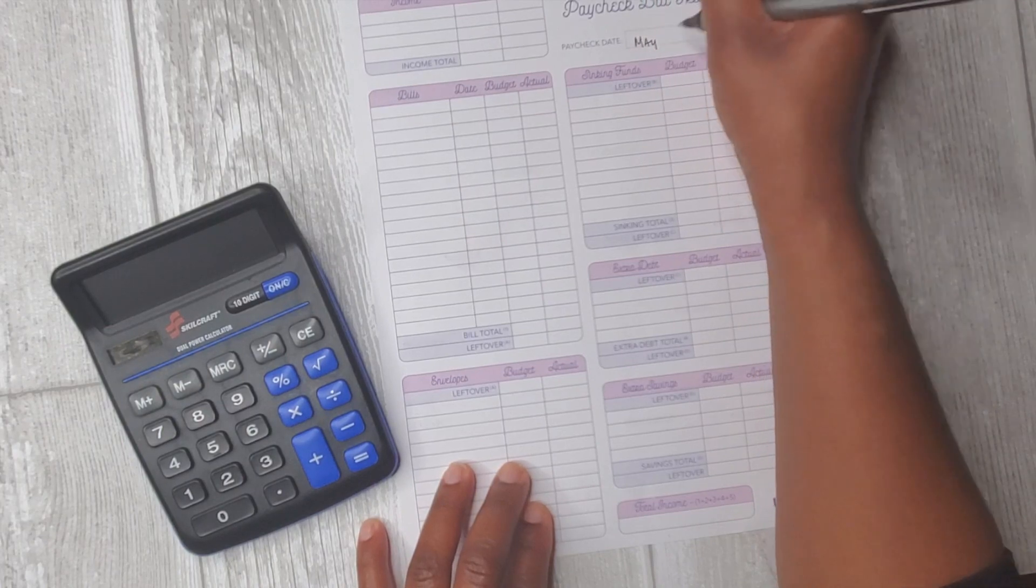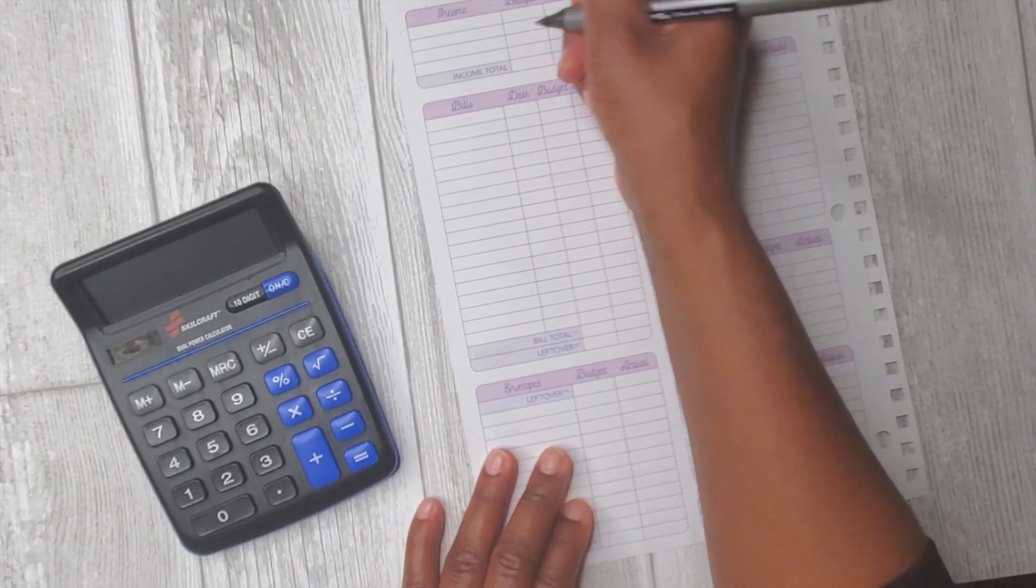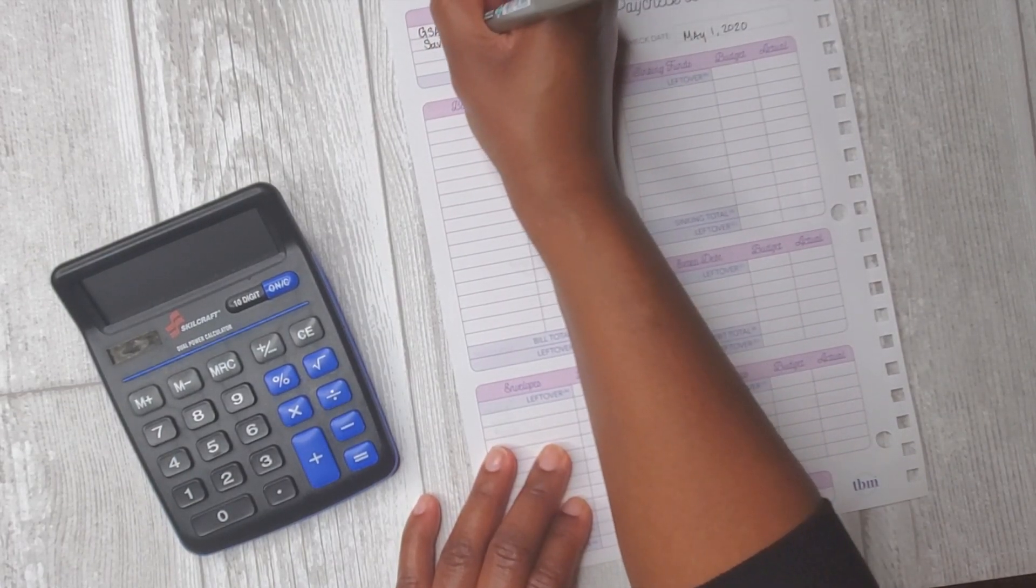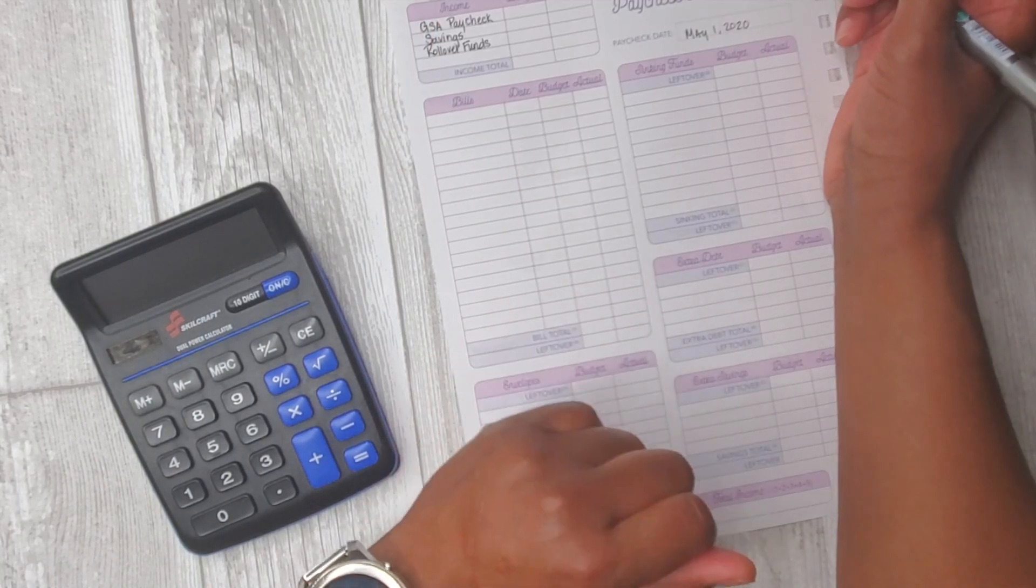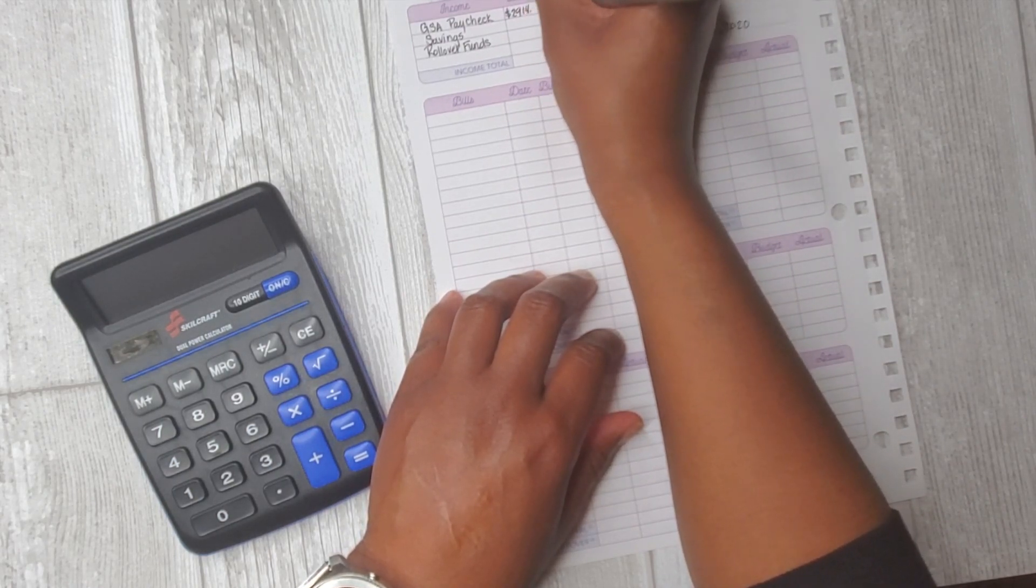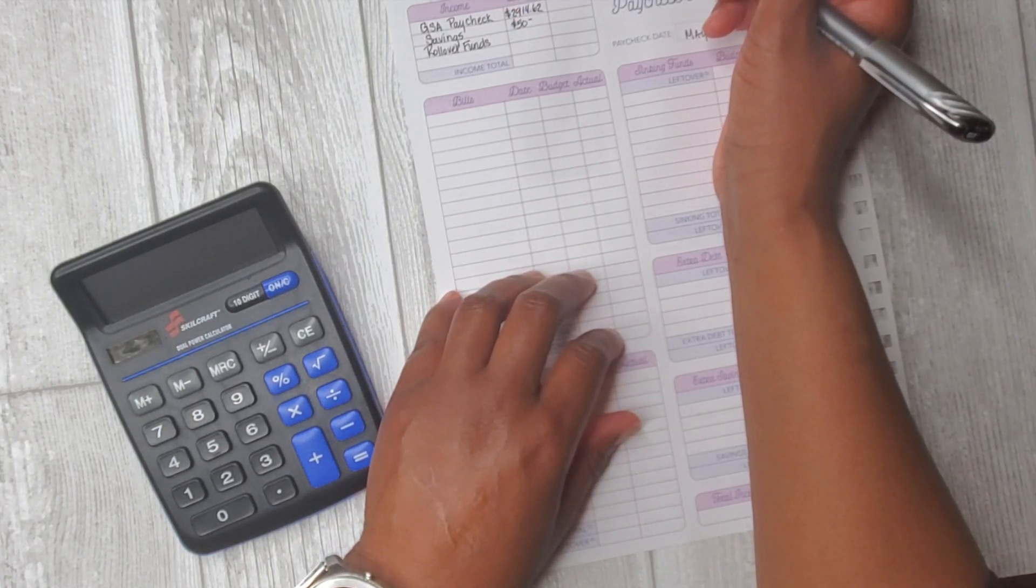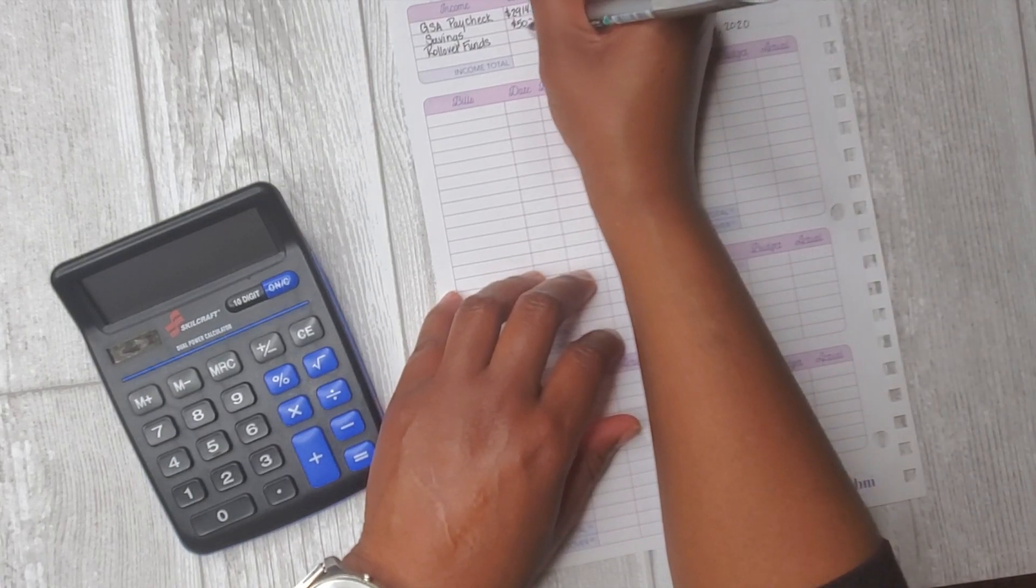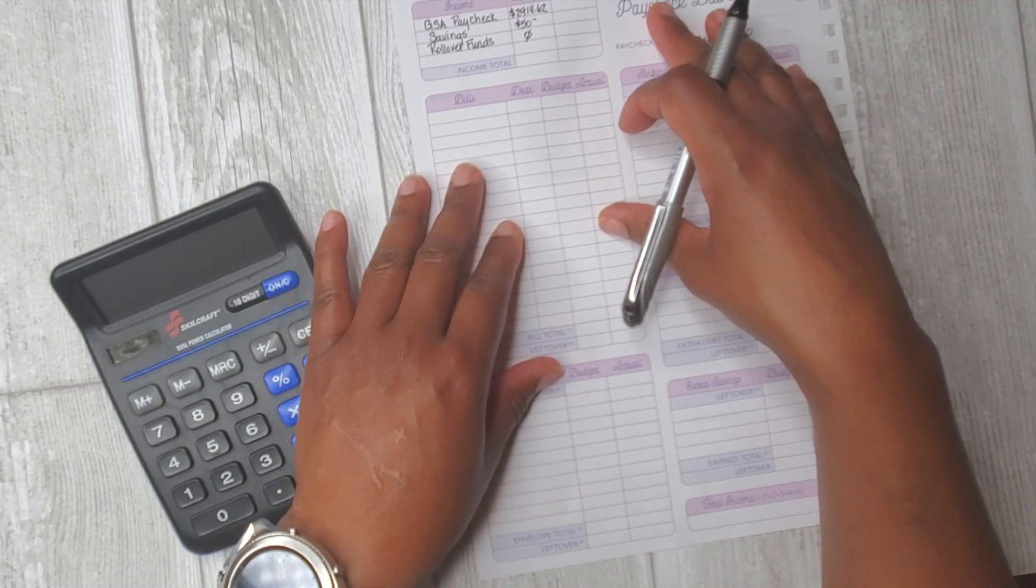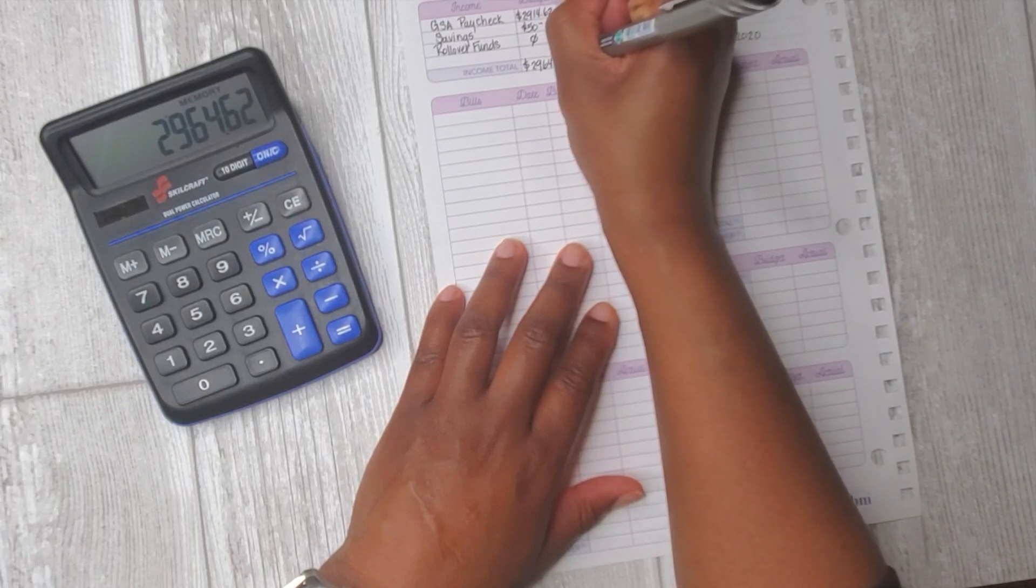I'm going to write in May 1st 2020 as my paycheck date and then my income sources. I have my paycheck from my job as well as my savings deposit and rollover funds. My estimated paycheck will be $2,914.62. Savings is always $50. I don't think I have any specific rollover funds for this paycheck so I'm going to estimate that to be zero, but it may be more and I'll fill that in when I get to my actual paycheck budget. So my total here will be $2,964.62.